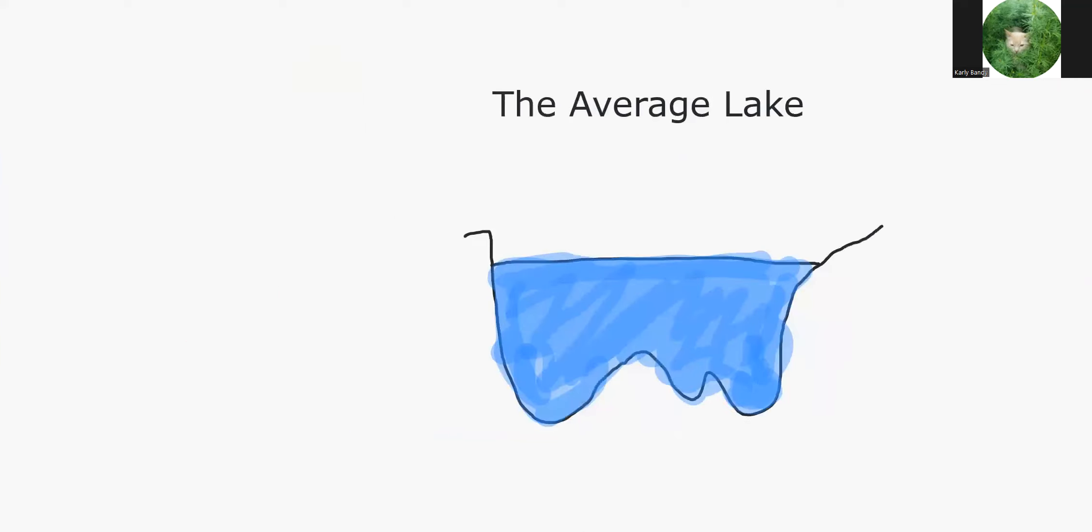So here's a cross section of your average lake. And as you can see, there is mixing all throughout the lake. And this is due to multiple processes, including wind, which can help mix the lake around.